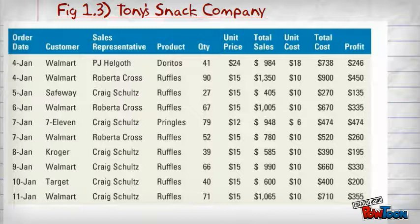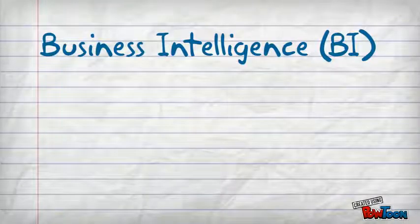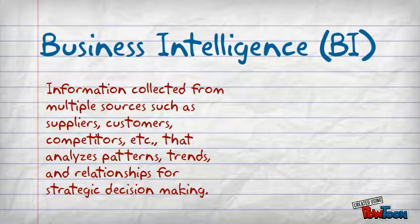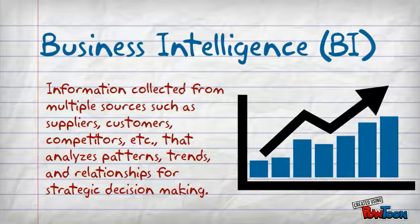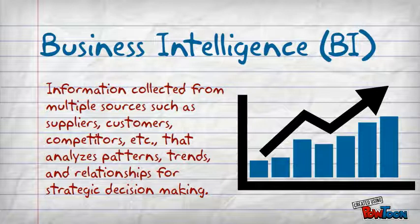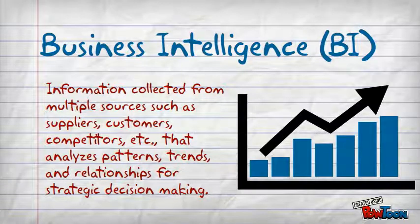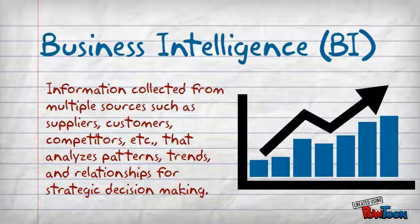So what more could we possibly want? How about information collected from multiple sources such as suppliers and customers, competitors, and industries that has been analyzed for patterns and trends to identify relationships for strategic decision-making. Something we call business intelligence.